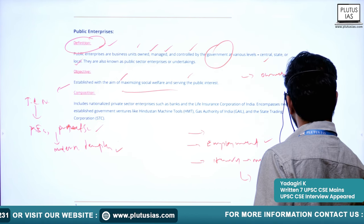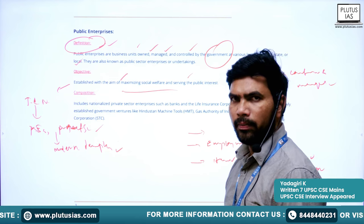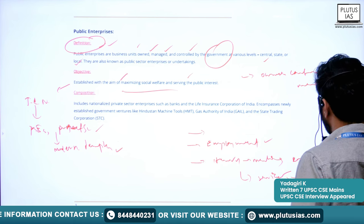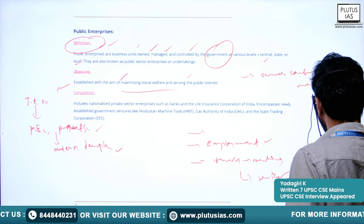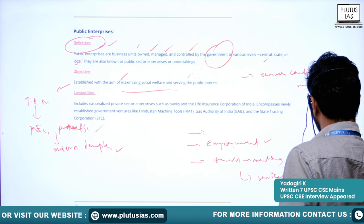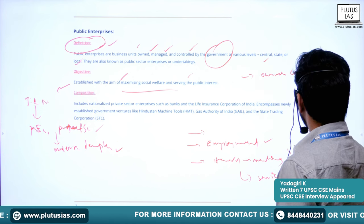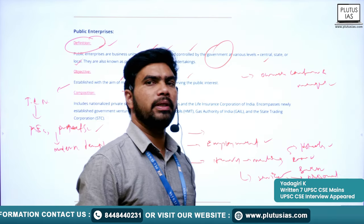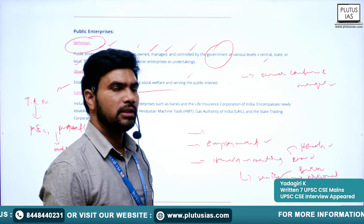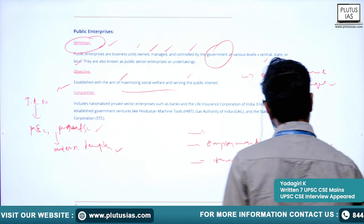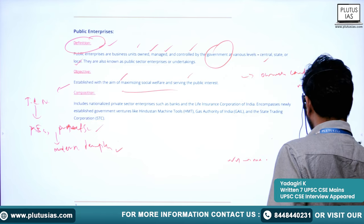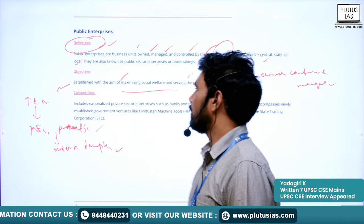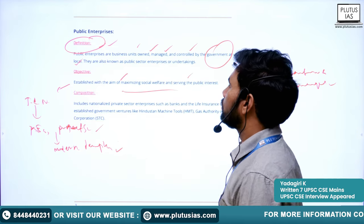As time passed, government public sector enterprises also entered the service sector — for example, banks. Some banks were established by the government, and many private sector banks were nationalized. Railways, Air India, and hotels were also established by the government. So the government ventured into many aspects of the service sector as well.